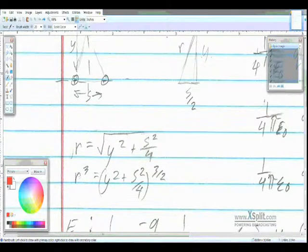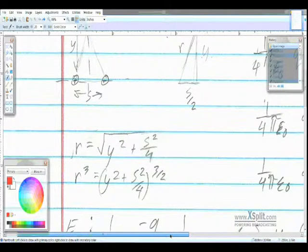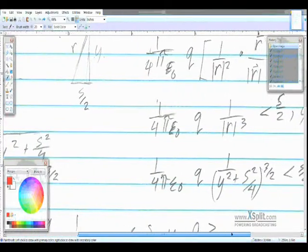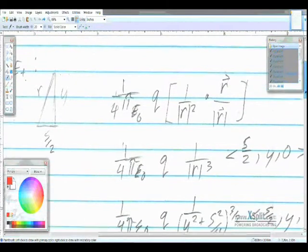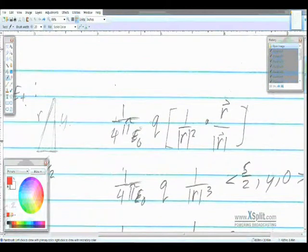Now we're going to want to find r cubed, and we're going to see in a minute why. So if we solve it for r cubed, we get y squared plus s squared over 4 to the 3 halves. Now we're going to have to remember that. I mean, we can just slide over, but you know. Anyway.